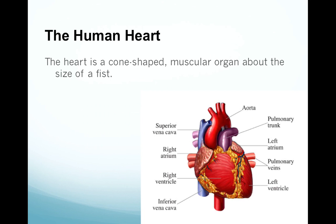The human heart is a cone-shaped muscular organ, and it's about the size of your fist. It's located between the lungs, directly behind the sternum or the breastbone, and it's tilted so that the apex, which is the pointed end, is oriented slightly to the left.